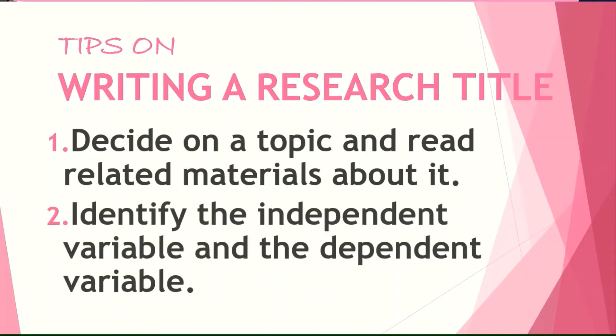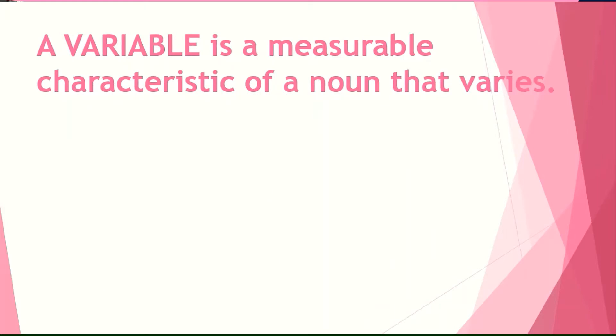Number two: identify the independent variable and the dependent variable. First, let's review what a variable is. It is a measurable characteristic of a noun that varies — meaning it changes. So anything that you can see, touch, or hear in a person, a place, or a thing, or any characteristic of these nouns that changes, may be called a variable.